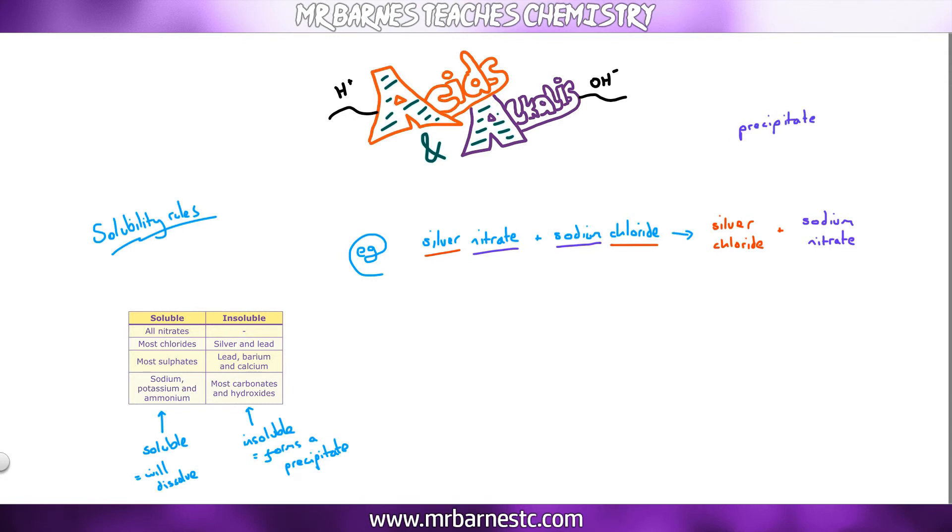You now need to figure out if we've got a precipitate or not. So we're going to start off with nitrates. Now as you can see from the table, all nitrates are soluble. So we know silver nitrate and sodium nitrate are both soluble. So the state symbol we can put in for them to prove that, to show that, is Aq, aqueous.